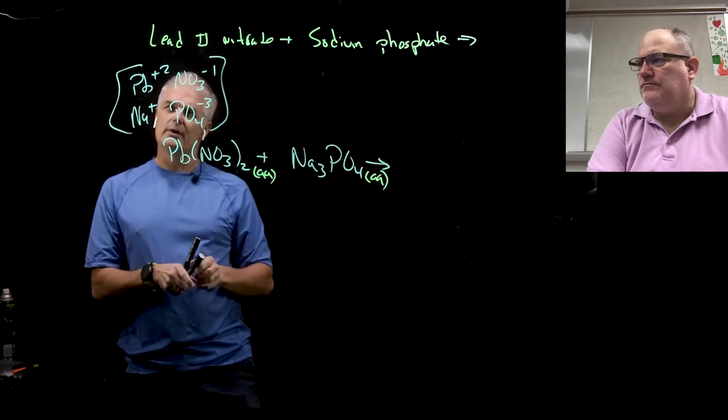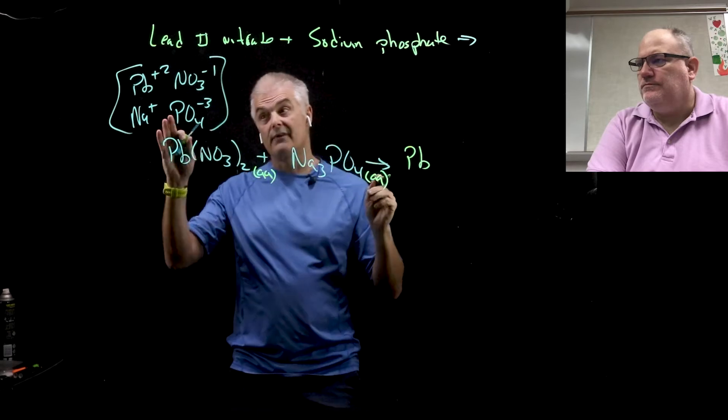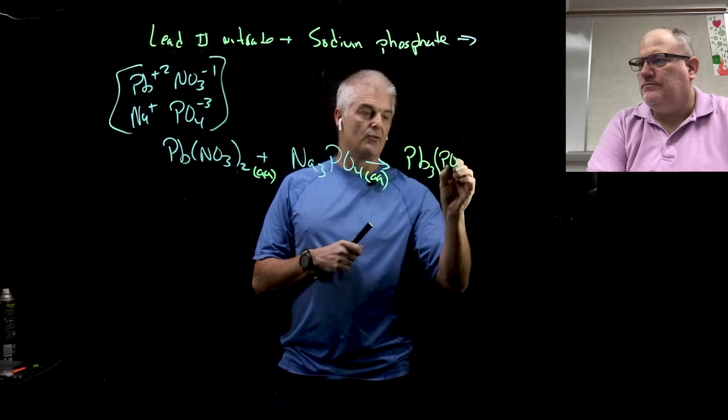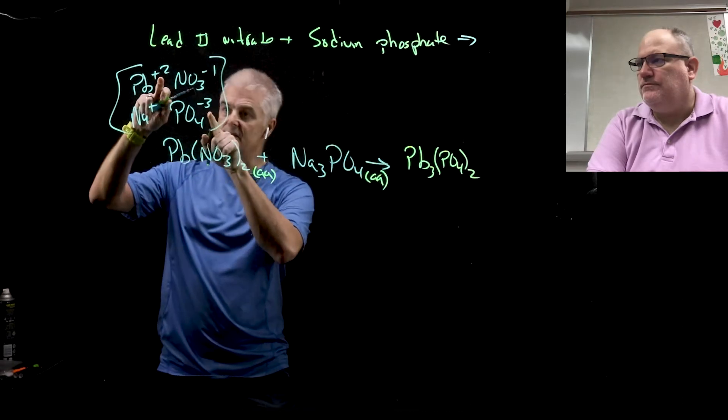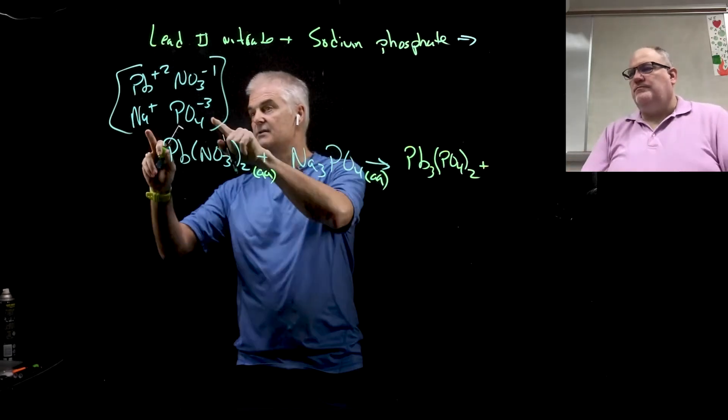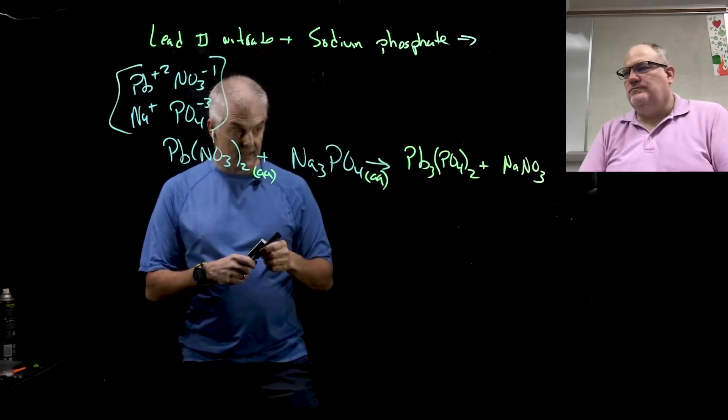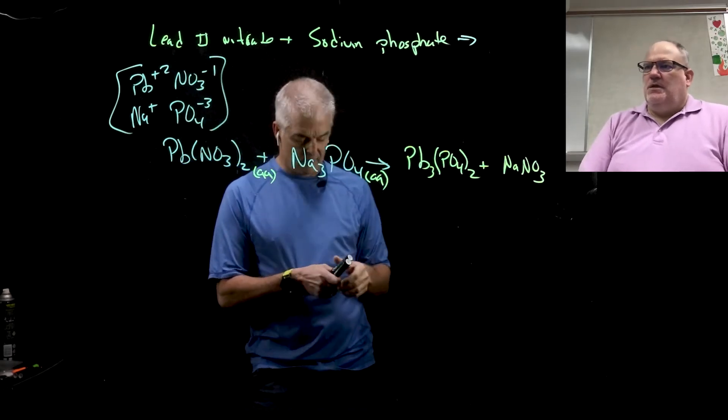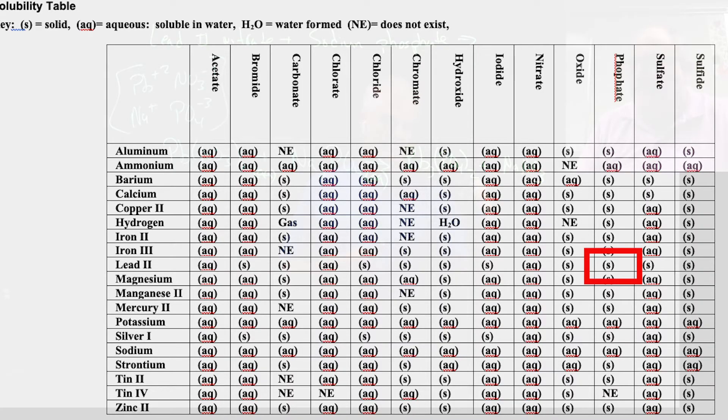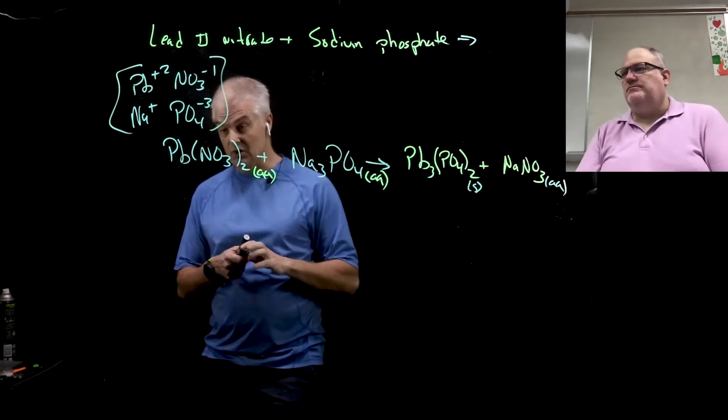Now we want to trade partners. The lead is going to get together with the phosphate. That's a tricky one, positive 2 negative 3, so that's going to be Pb3(PO4)2 because of the positive 2 negative 3, you got to get to a 6 charge. And that leaves sodium nitrate which is NaNO3. Can you look up lead phosphate and sodium nitrate on the table? Lead phosphate is a solid and sodium nitrate is aq, so that reaction occurs.